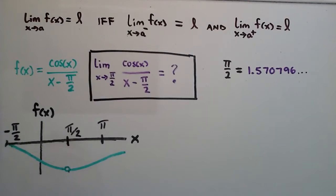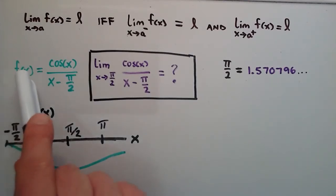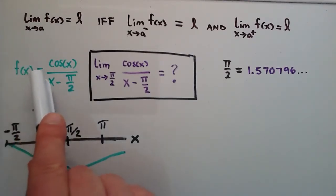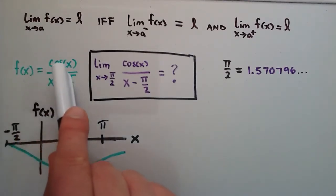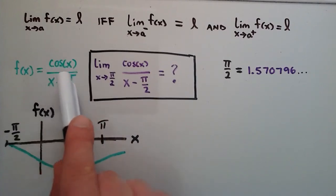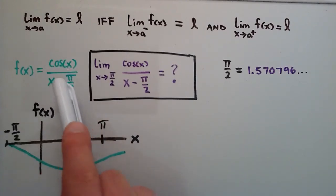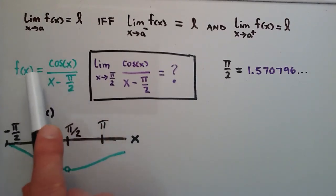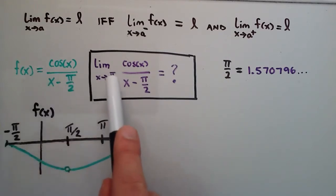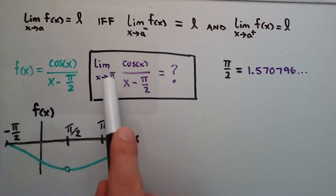We're going to be finding the limit of our function f(x), where f(x) is equal to cosine of x divided by x minus pi over 2. And we're going to be finding the limit of this function as x approaches the value pi over 2.